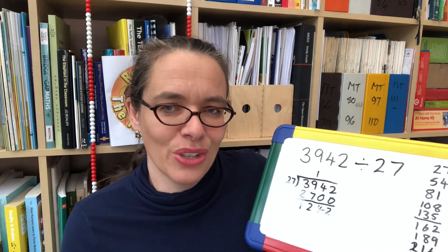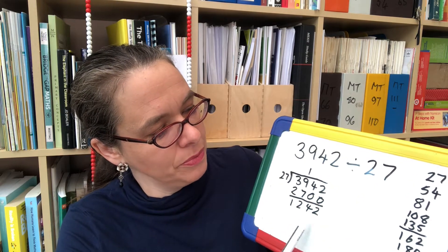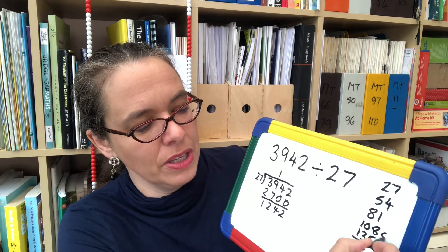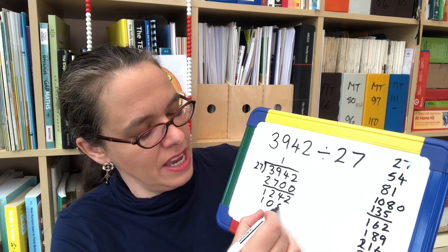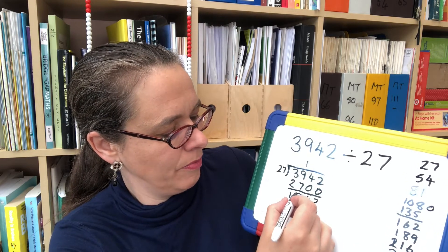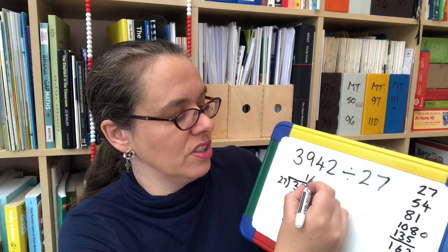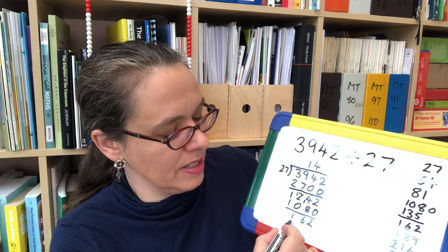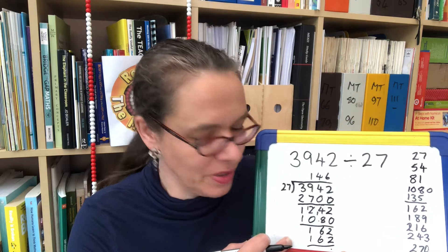Now we look at tens of lots of 27 — so that's 270s. How many 270s can we subtract? Well, this is the 27 times table, so the 270 times table just has a zero on the end, and we quickly see that the number we're looking for is 4 lots of 270, which is 1080. Let's subtract it. That gives us 162, and 1080 was 40 lots of 27. 27 goes into 162 six times — we know 162 is 6 lots of 27 — so we get 6. That's our counting groups method of long division.